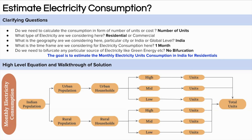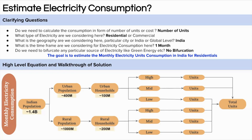Indian population is around 1.4 billion, where urban population contributes roughly 30% and rural population roughly 70%. That gives 400 million people in urban areas and 1,000 million in rural areas. We assume an average household size of 4 in urban areas, giving around 100 million urban households, and 5 in rural areas, giving around 200 million rural households.